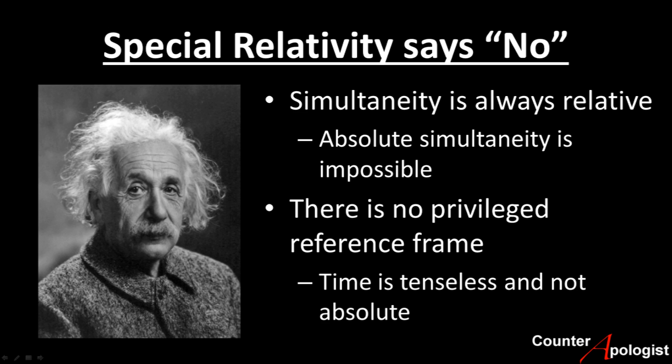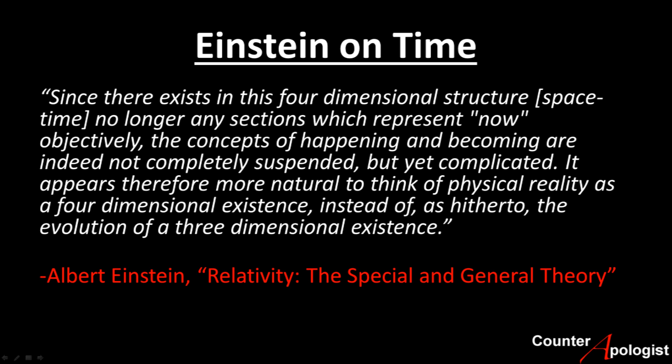This is something that Einstein himself realized in his book Relativity, to quote: 'Since there exists, in this four-dimensional structure — space-time — no longer any sections which represent now objectively. The concepts of happening and becoming are indeed not completely suspended, but yet complicated. It appears therefore more natural to think of physical reality as a four-dimensional existence instead of, as hitherto, the evolution of a three-dimensional existence.'